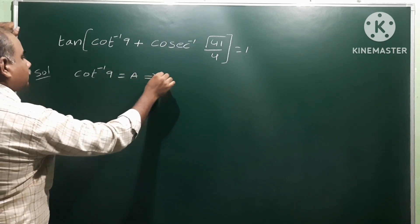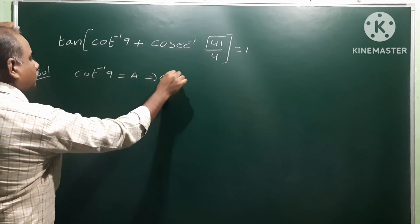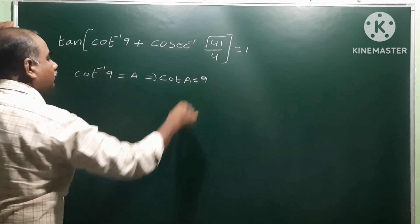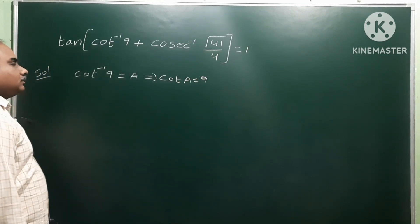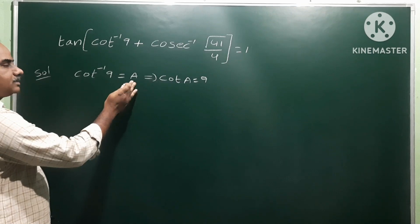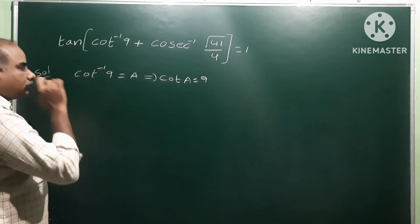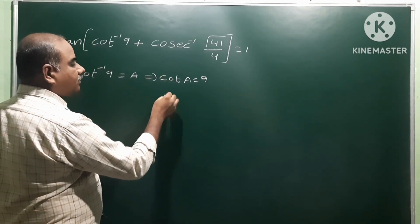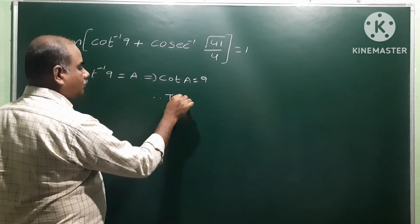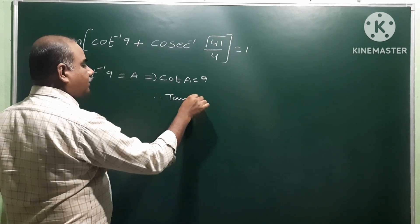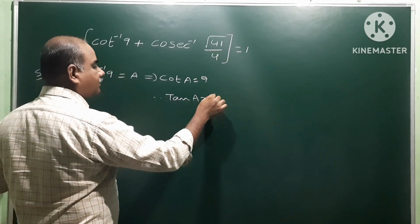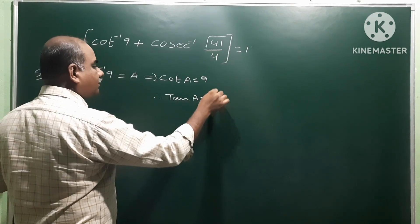Then we get cot(a) = 9, since cot inverse on the right side of cot(a) is equal to 9. From this, we want to write tan(a), so tan(a) = 1/cot(a), which gives us 1/9. So this is the value of tan(a).